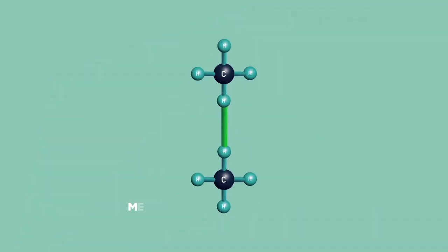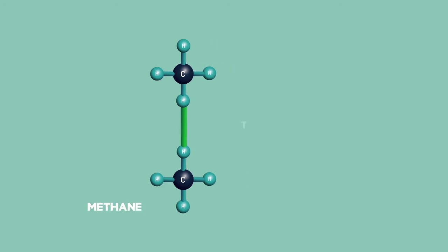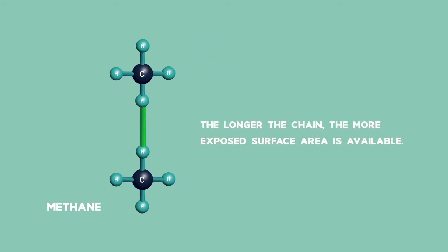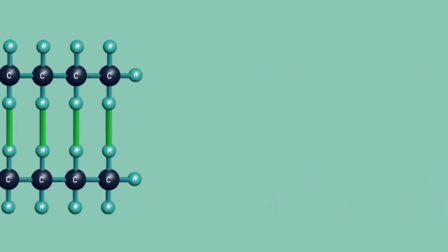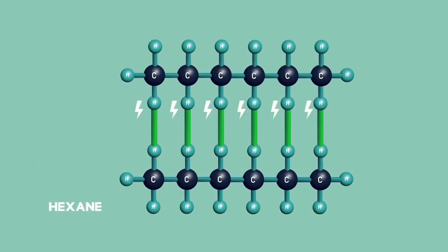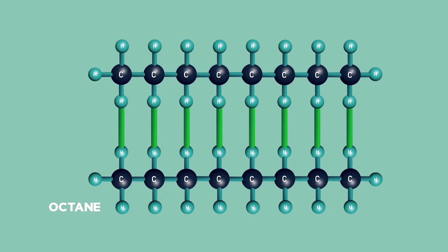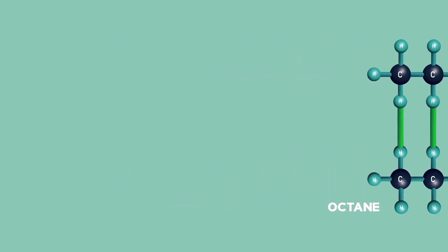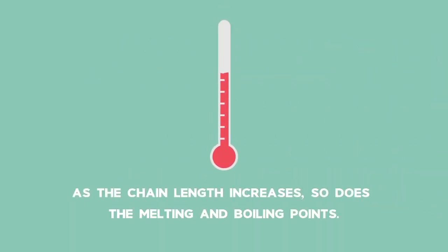When comparing compounds within a homologous series, the longer the chain, the more exposed surface area is available, which means there are more bonding sites, and therefore more energy is required to break the bonds, which results in higher melting and boiling points for the compounds. Therefore, as chain length increases, so do the melting and boiling points.